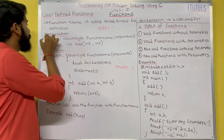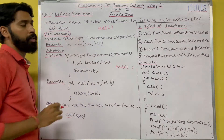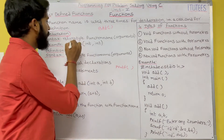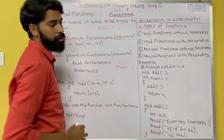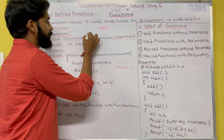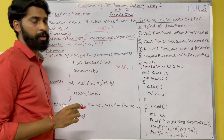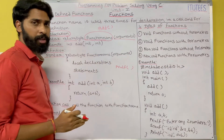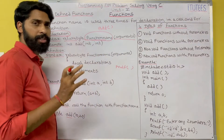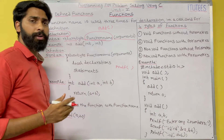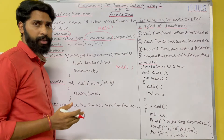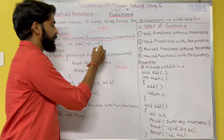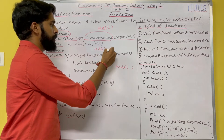First we are going to see how to declare a function. The syntax for declaration of a function is: return type, function name, arguments. The function name is compulsory; the return type and arguments are optional. For example, if I want to define a function 'add', before the definition you are going to declare the function in C — just write 'add'.